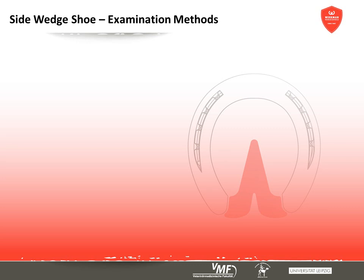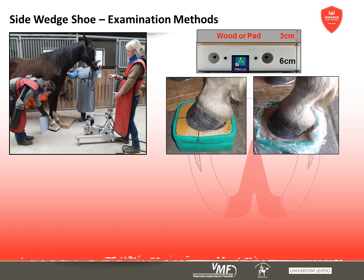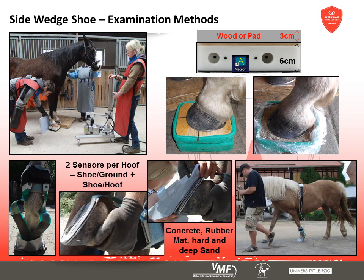The effects of the standard as well as the side wedge shoe were examined by radiological and pressure measurements. The radiological examinations followed a standardised protocol and were carried out on a firm and soft x-ray block in order to simulate different types of ground. Two pressure measurement sensors were simultaneously fixed on the hoof and every examination was carried out on four different types of ground.